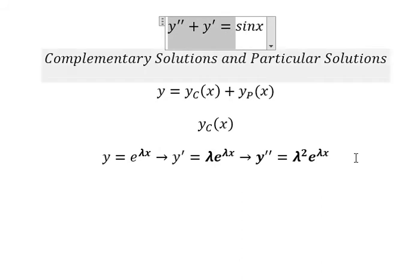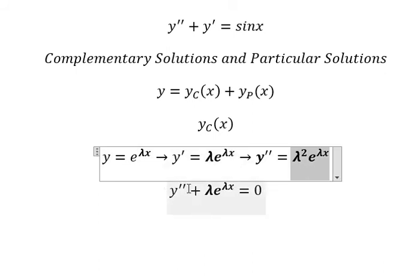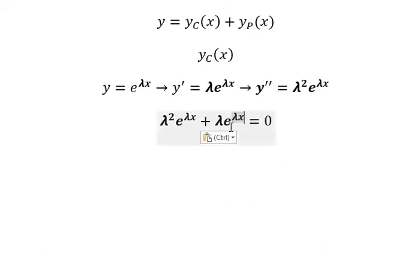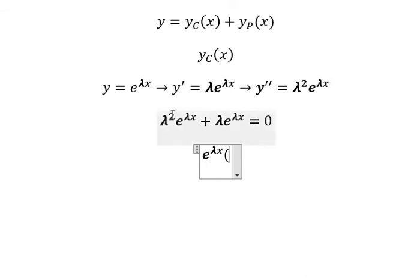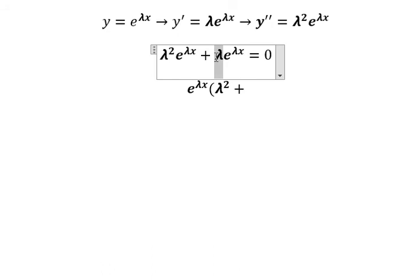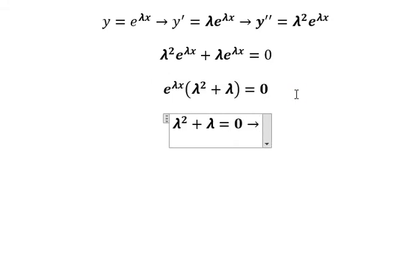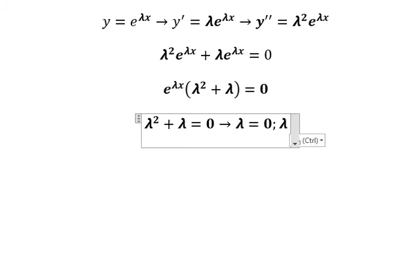We substitute the derivatives in, replacing each term accordingly. After factoring out e to the power of lambda x, we get the characteristic equation: lambda squared plus lambda equals zero. Since e to the power of lambda x is never zero, we solve for lambda and get two solutions: lambda equals zero and lambda equals negative one.